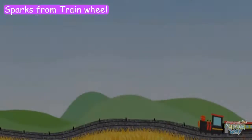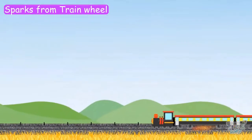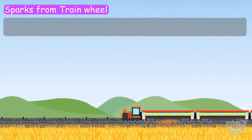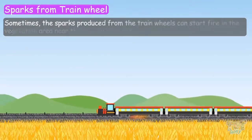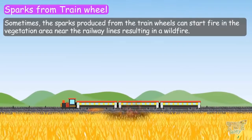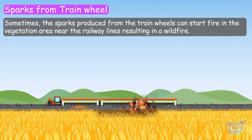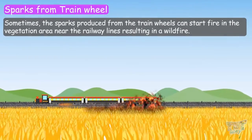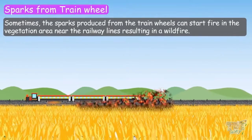Next are the sparks from train wheels. Sometimes, the sparks produced from a train can start a fire in the vegetation nearby.